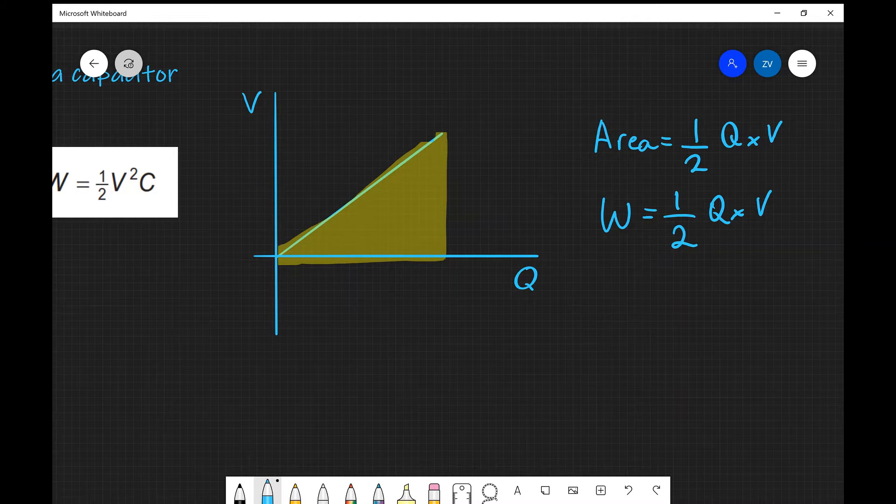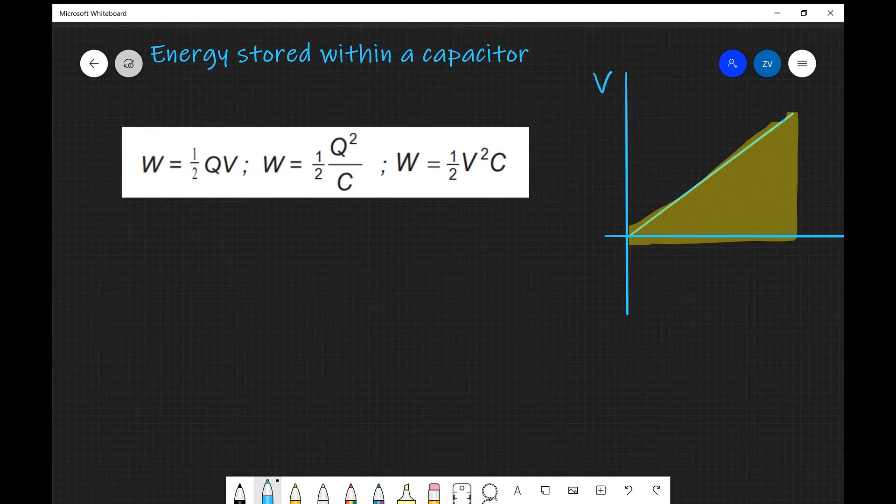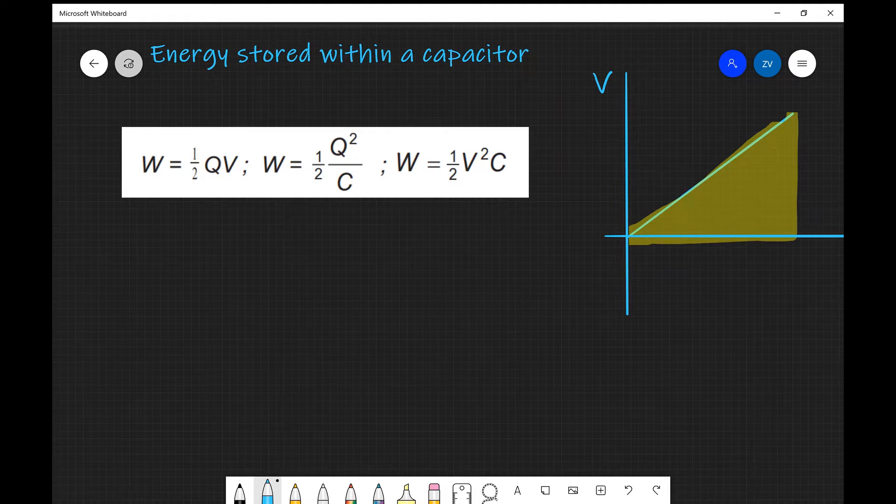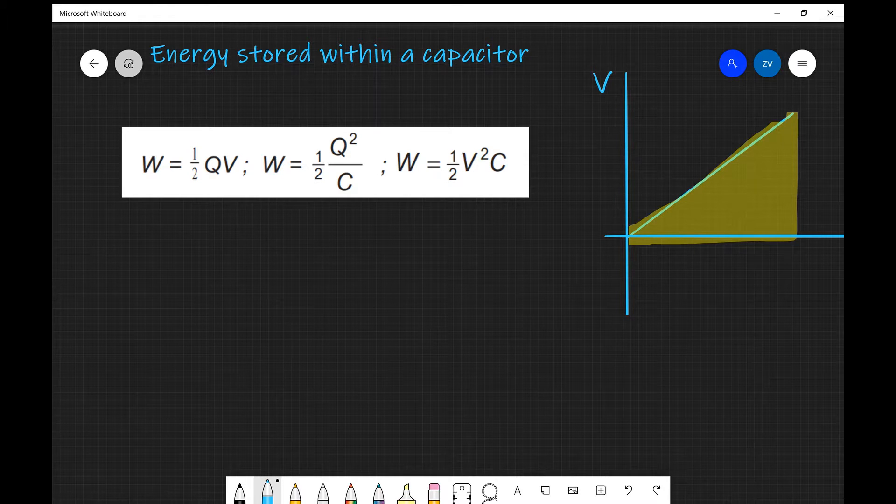Notice that this equation only applies for capacitors, so it's very specific. This is given in your formula sheet as well, so I've taken this straight off the OCR Physics A formula sheet and you can see that W is equal to a half QV.